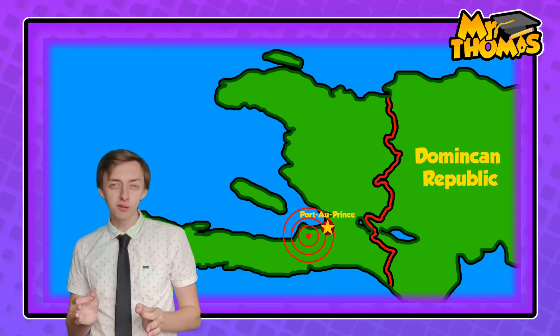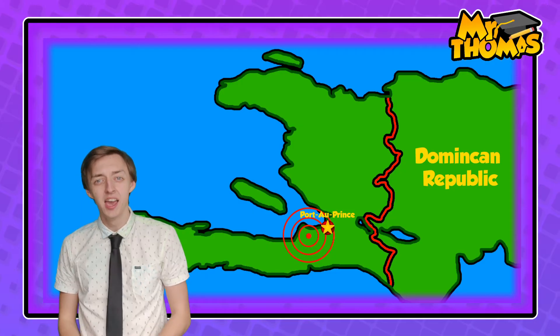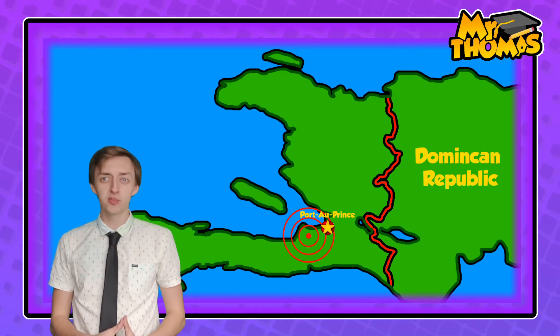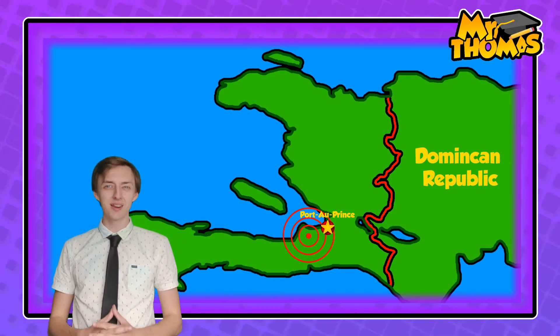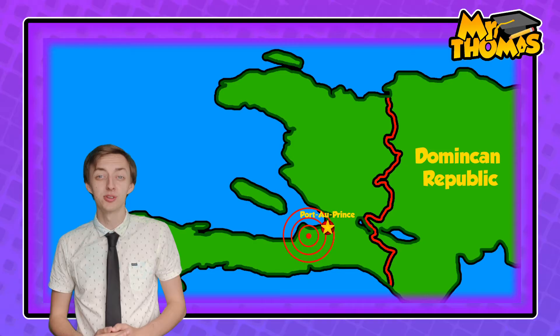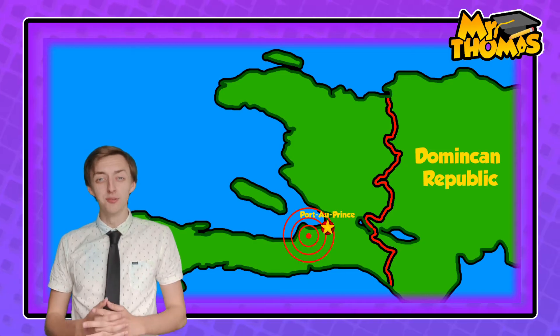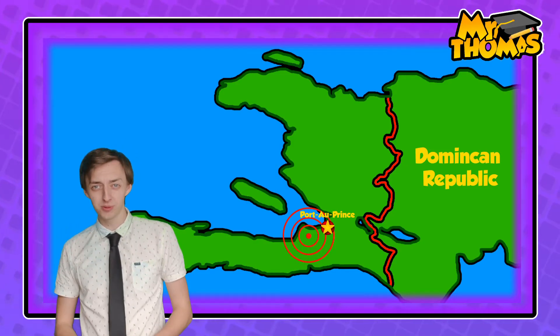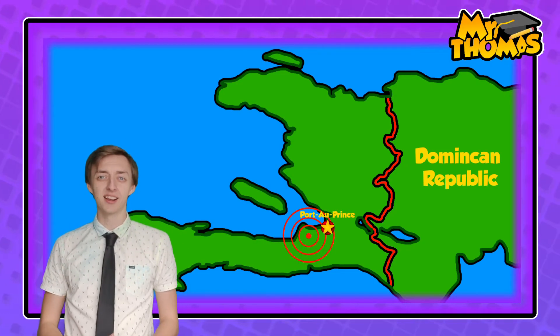On January 12th, 2010, a magnitude 7 earthquake struck approximately 25 kilometres west of Port-au-Prince, resulting in widespread destruction and catastrophe. So let's look at the impacts of this earthquake — that is, what happened as a result of the earthquake.